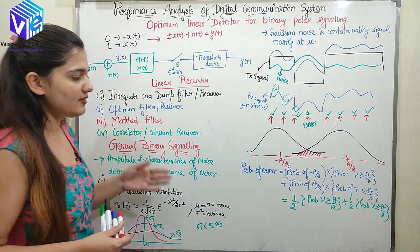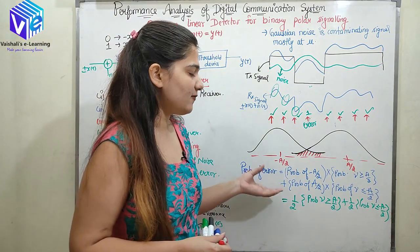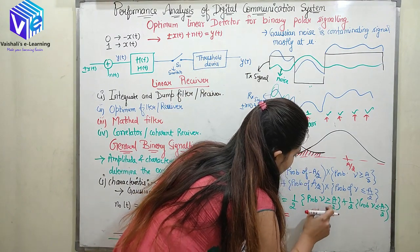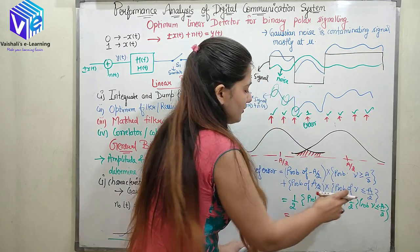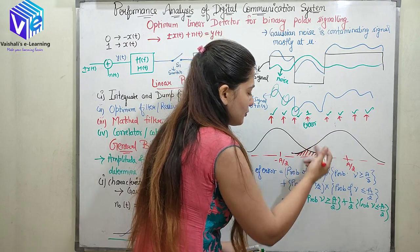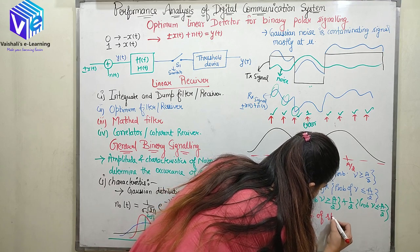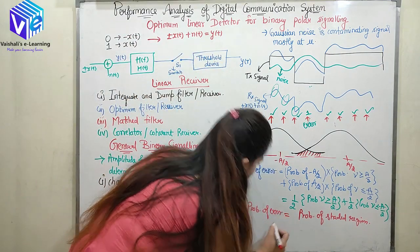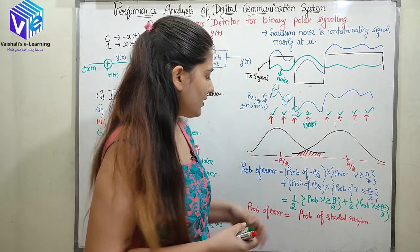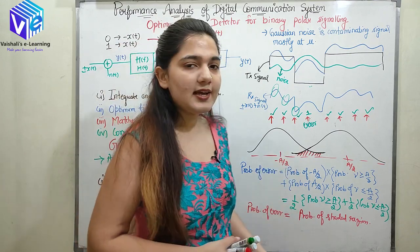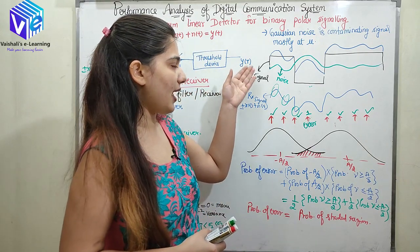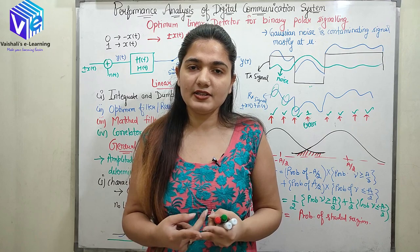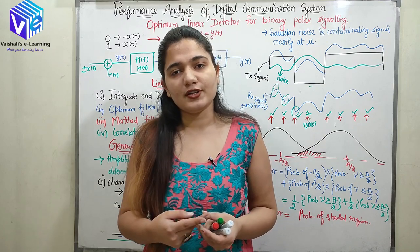This procedure will be followed for every receiver — I will discuss all four receivers following this same approach and give a general expression for the probability of error. The probability of error equals the probability of the shaded region in the Gaussian distribution. Two things affect the signal: the characteristic of the noise and the amplitude of the noise. I will be covering these four types of receivers in upcoming videos.